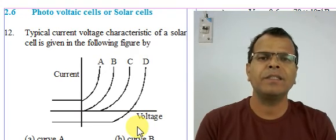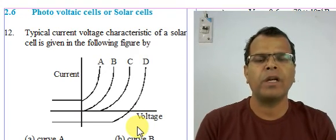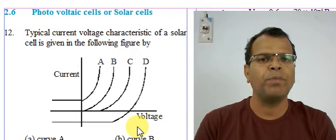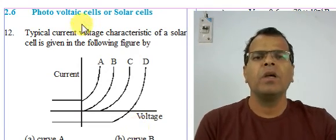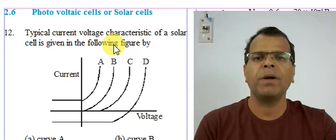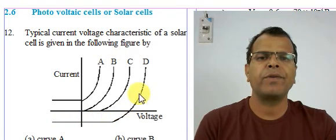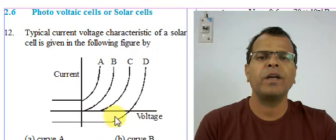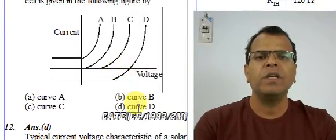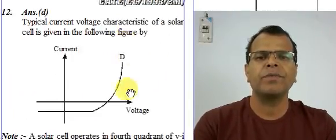Otherwise, it is a PN junction diode like a photodiode where it is illuminated and terminals are kept open circuited. The first question asks for the typical current-voltage characteristic of a solar cell. You need to recall that the solar cell characteristic works in the fourth quadrant of the IV curve. Curve D gives you that characteristic.